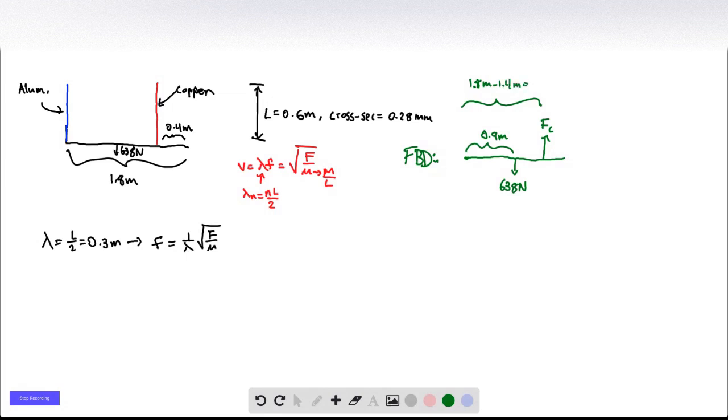I'm sorry, 1.8 minus 0.4 meters. And we're going to have the force of aluminum going from the aluminum wire going up. And so what we're going to do is we're going to take the sum of torques about this point here. So we can say that the sum of torques about this point is equal to 0, because it's in equilibrium. And that's going to be minus 638 newtons.